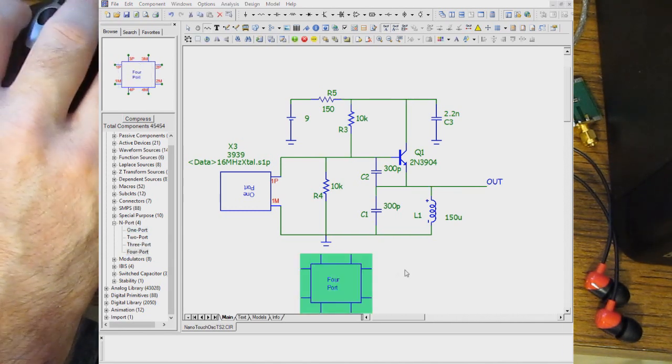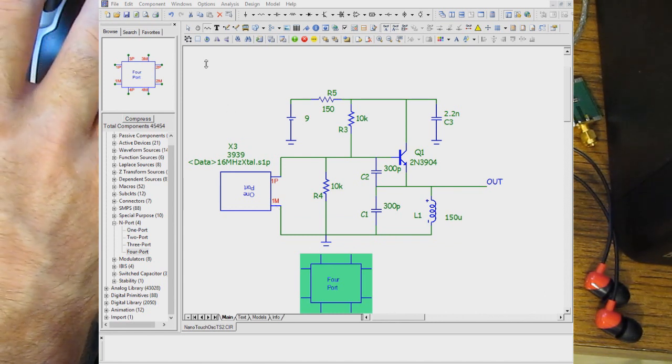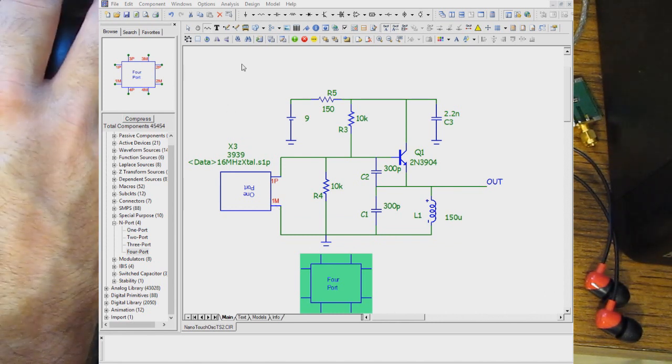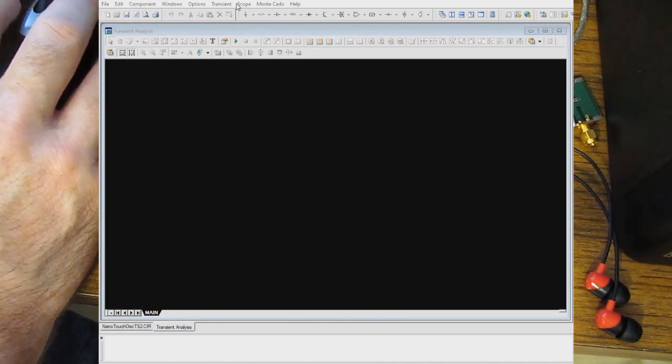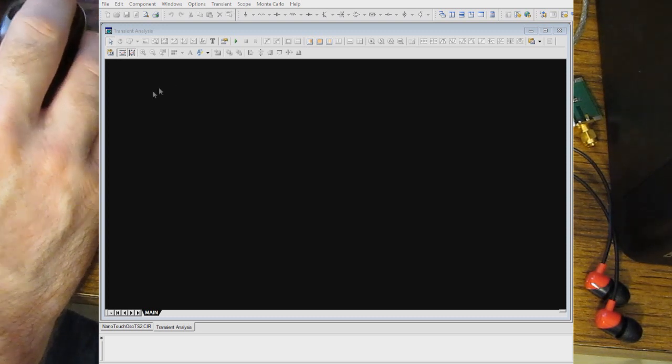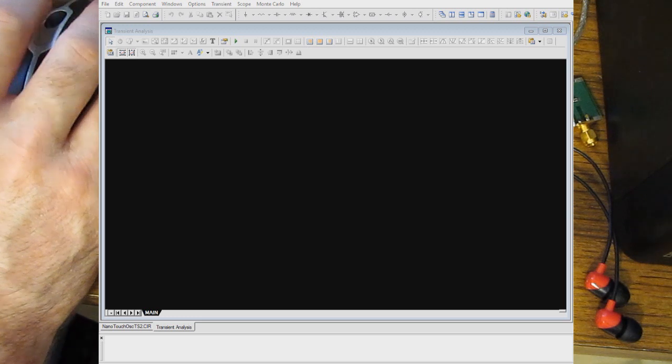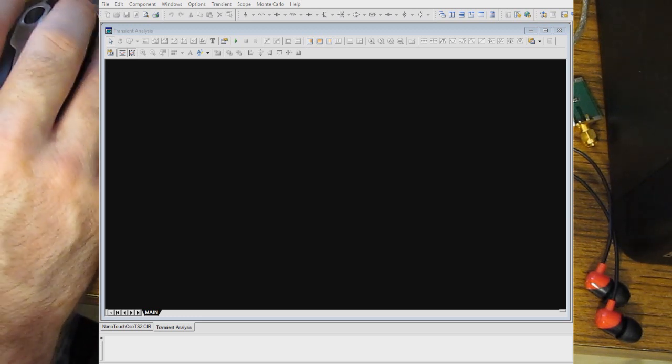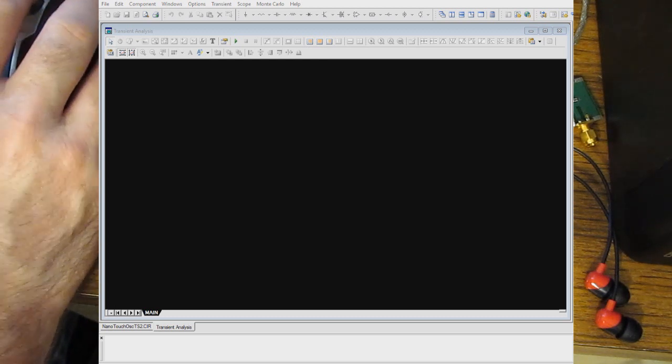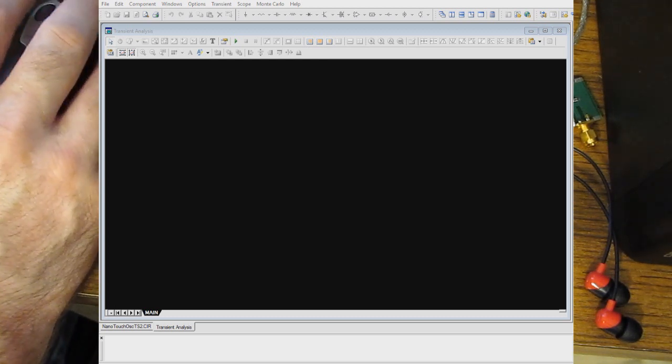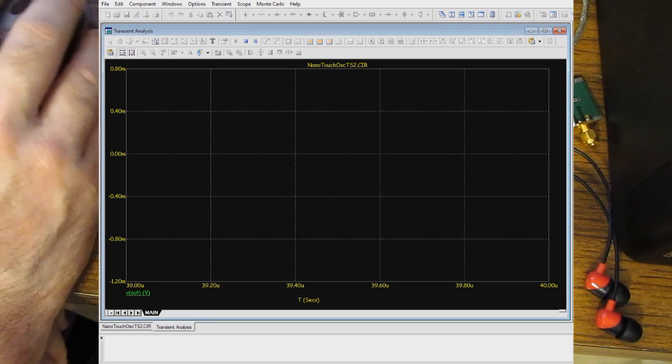If I wanted to drag this into the schematic, that would be our 4 port. Unfortunately, the Windows Capture software won't show the pop-up menus. And then we can go to Analysis, and we're going to select the Transient Analysis. And again, unfortunately, you can't see the pop-up, but essentially I'm going to run it for 40 microseconds. I'm going to start the output at 39 microseconds. I'm going to set the maximum step to 100 picoseconds. And you can see I'm just going to display the output voltage. So let's go ahead and select Run.